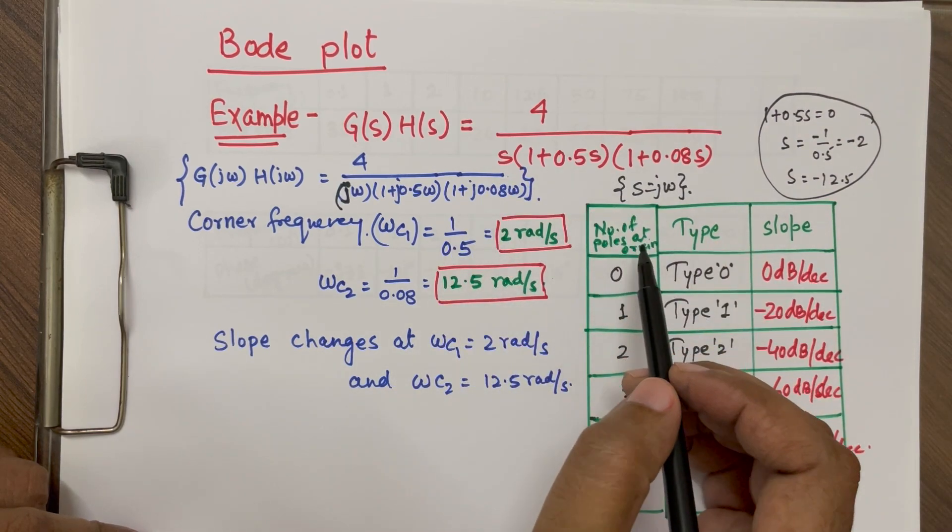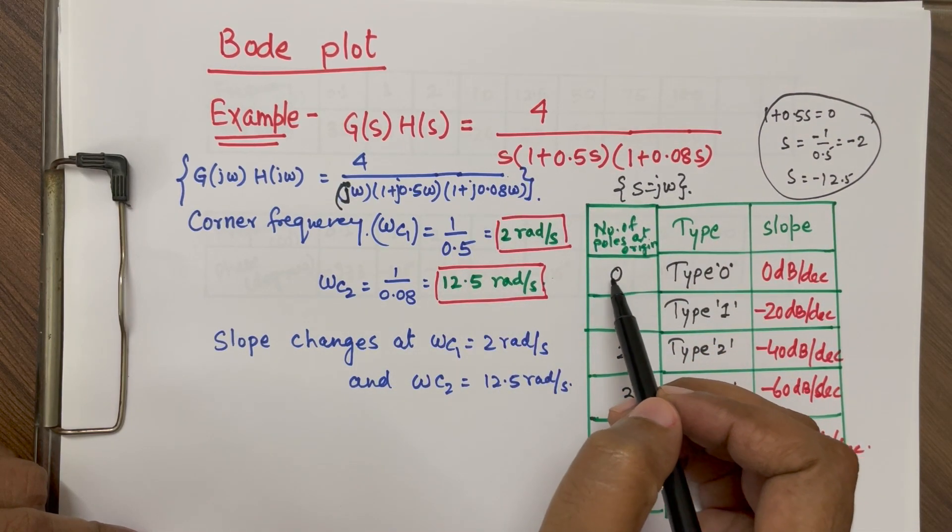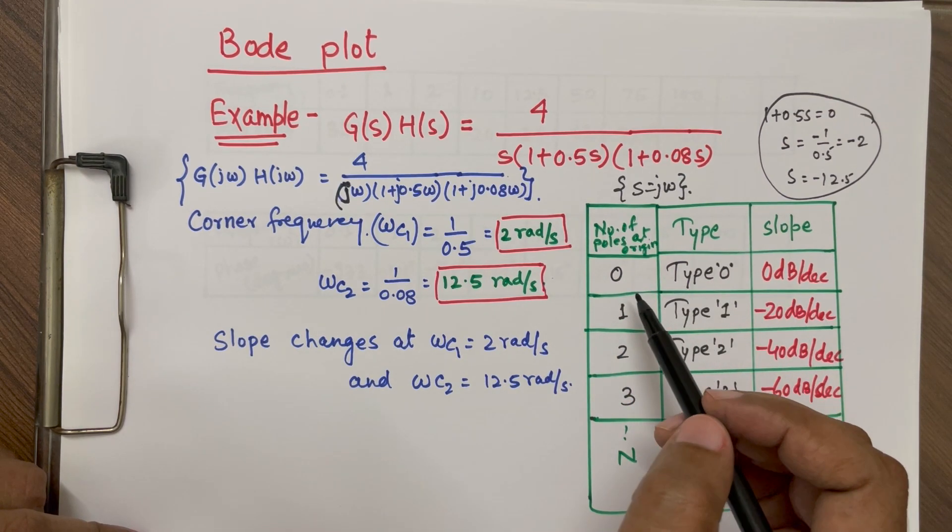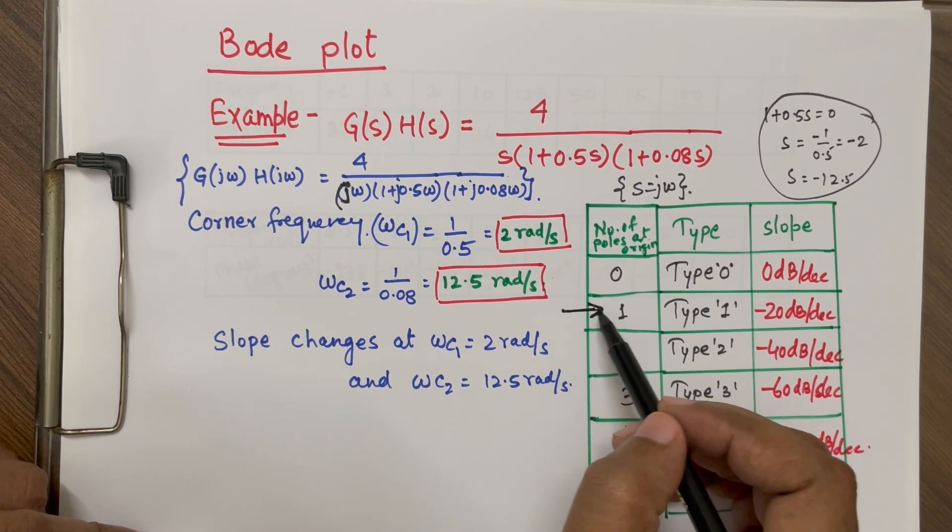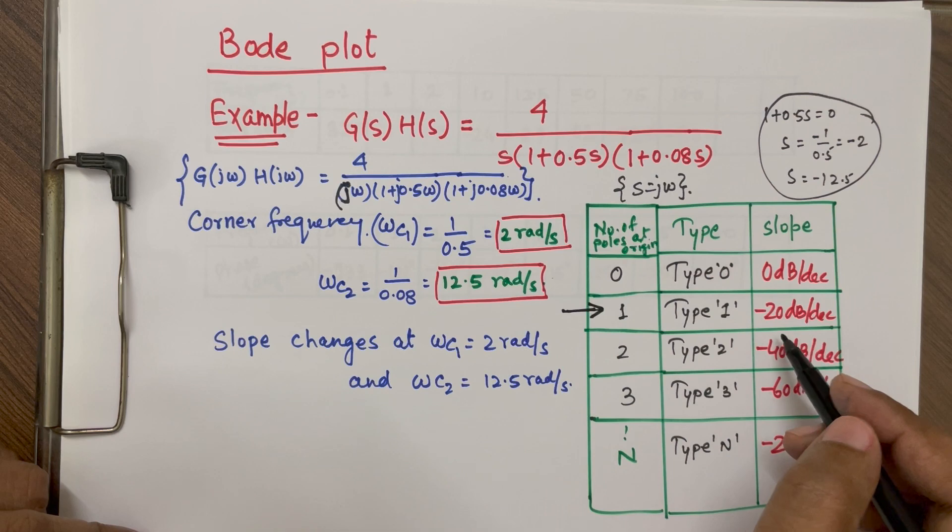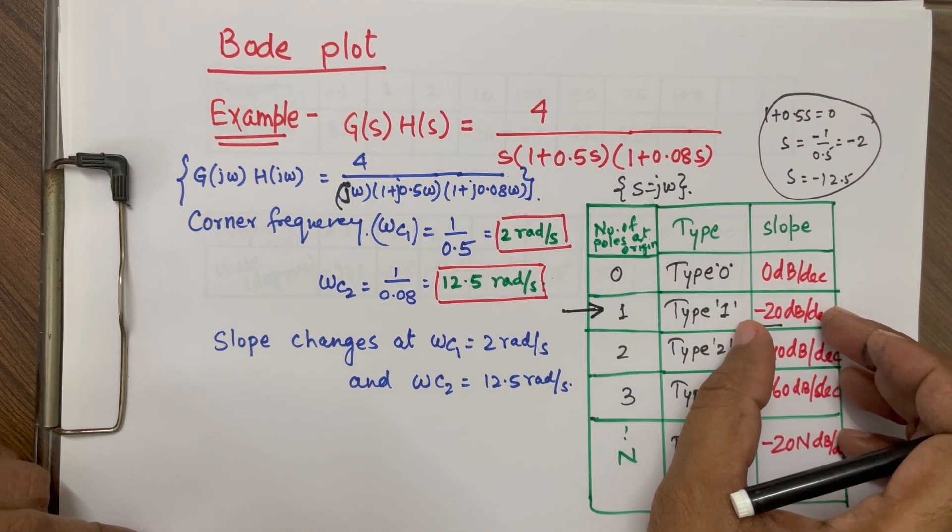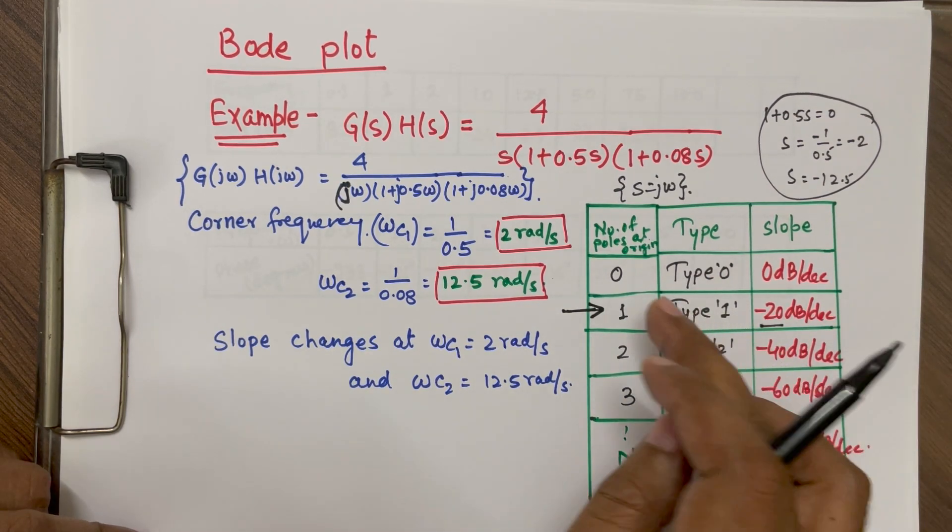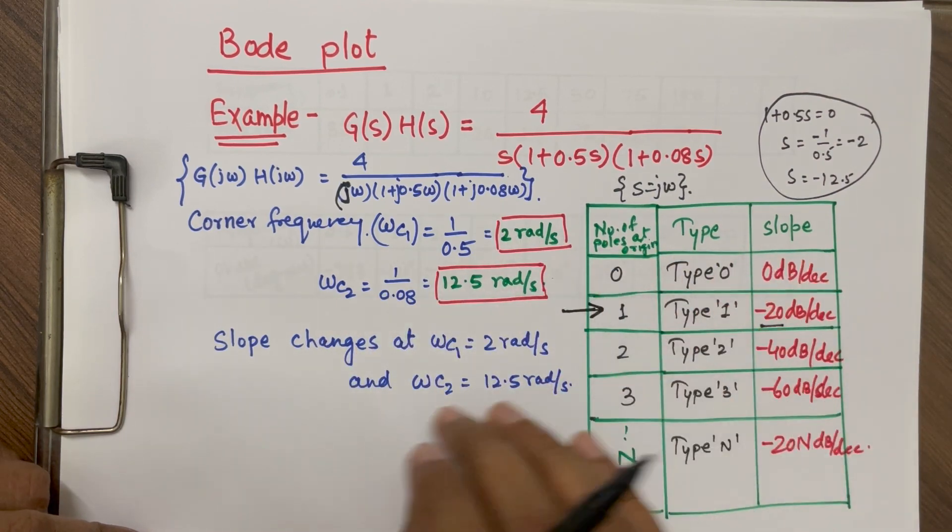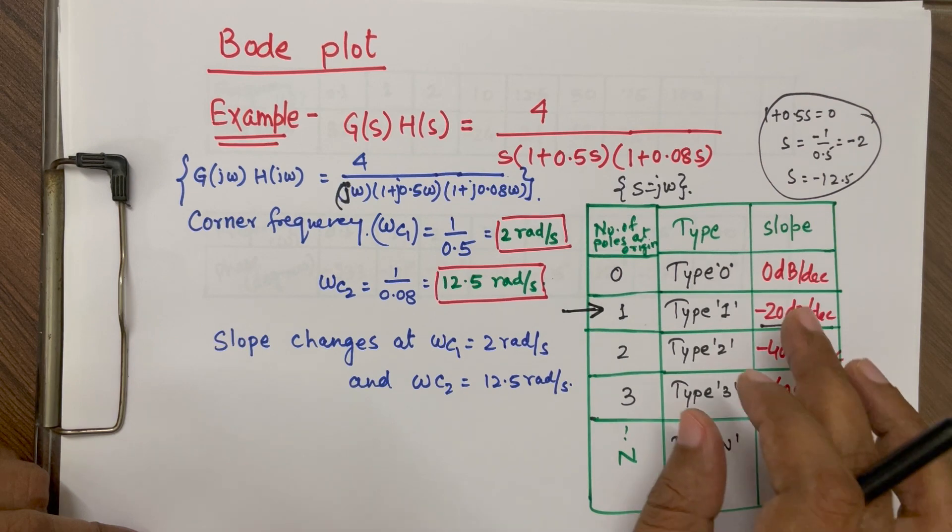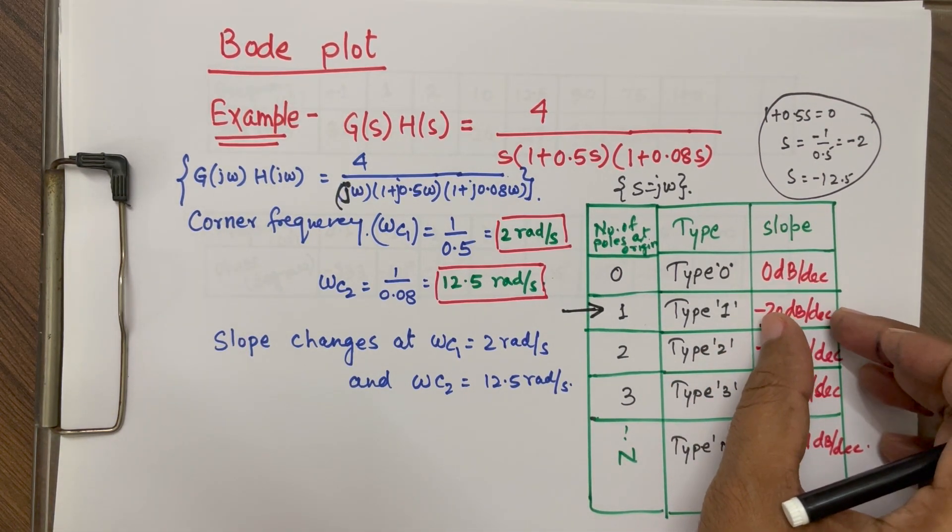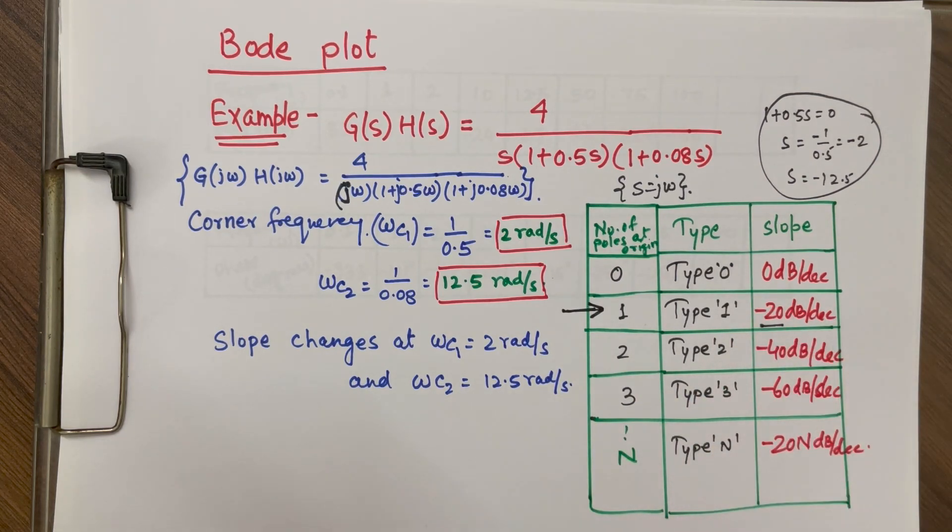So depending upon the number of poles available at origin, we define the type of system. So this is basically coming under category of type 1 system where there is only one pole at the origin. In this case, slope will be minus 20 dB per decade. If there is no pole at the origin, slope will be parallel to the frequency axis. But here there will be decay and this one we are going to understand on the graph how to plot this.